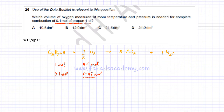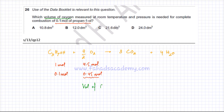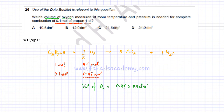That's the amount of oxygen required for complete combustion. The next thing we need to do is find the volume, because the question asks for volume of oxygen, not moles. The volume of O2 is the moles of oxygen — 0.45 — multiplied by the molar volume, which is 24 dm³. Using a calculator: 0.45 multiplied by 24 gives an answer of 10.8 dm³.